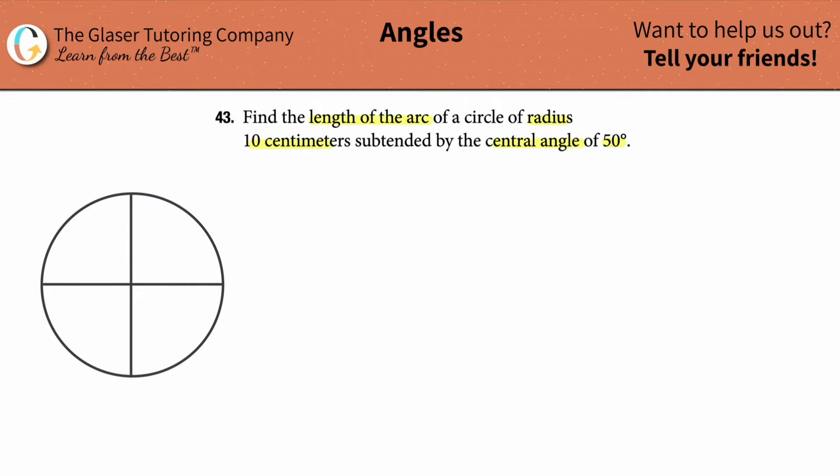Now, they're giving us angles in terms of degrees, so I will label this in terms of degrees. This is 0 degrees and this is 90. We always work from the positive x and then work counterclockwise if we're dealing with positive degrees. That's 180 and then that's 270.